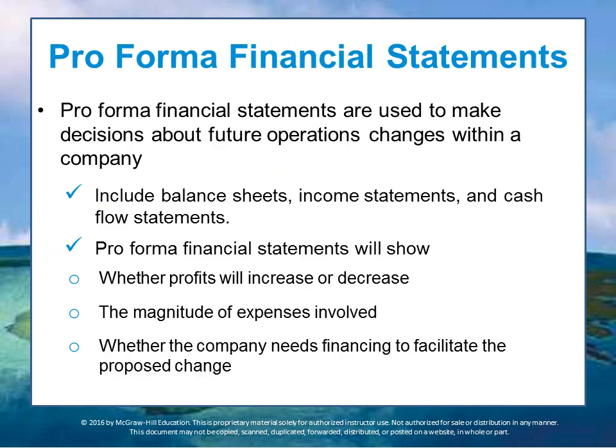That's the discussion of the income statement, balance sheet, and cash flow. Typically, all of these are used to record historical information about how the company is doing. But there's another use for this conceptual structure, and that's for planning purposes — that's when you use what's called a pro forma financial statement. Pro forma financial statements are used to make decisions about future operations within the company. They include the balance sheet, income statement, and cash flow statements, but they don't necessarily reflect historical information; rather, they reflect a scenario as if something would happen that hasn't actually yet occurred.